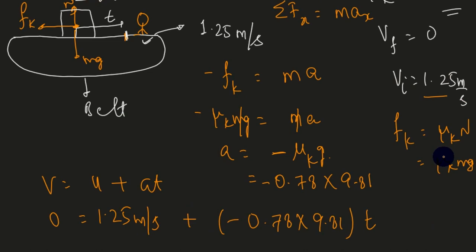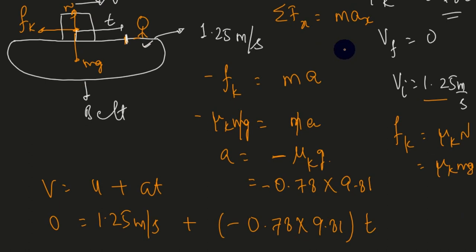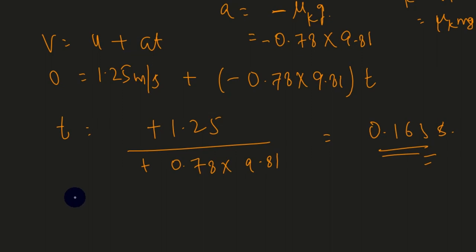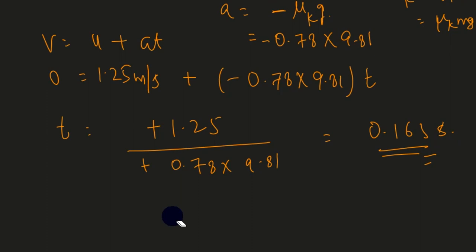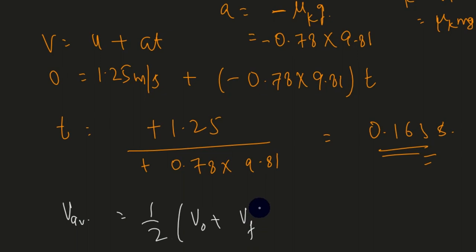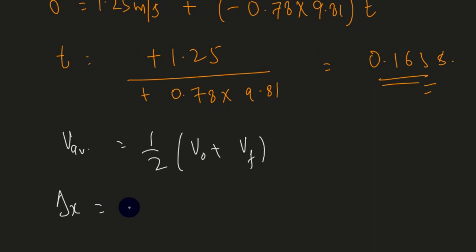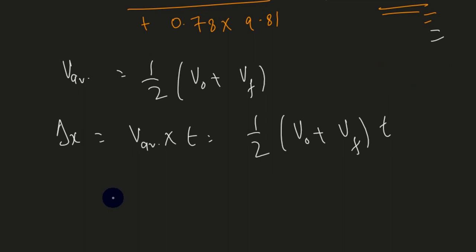For part (b), how far does the box move in this time? Using average velocity: Δx = (1/2)(v₀ + v_f) × t = (1/2)(1.25 + 0) × 0.163, which gives the distance covered.